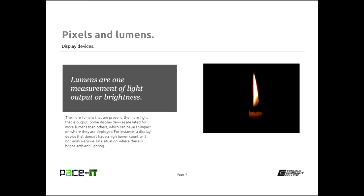So what's a lumen? A lumen is a measurement of light brightness or light output. The more lumens that are present, the more light that is output. Some display devices are rated for more lumens than others. That means that if you're working in a brightly lit environment, you need a monitor or a display device that outputs a fair amount of lumens.